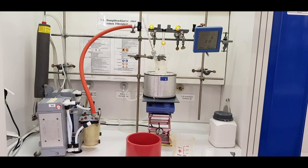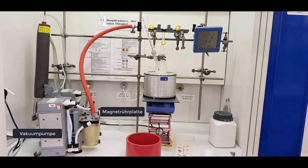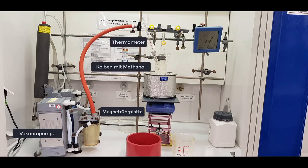The setup for this experiment consists of a vacuum pump, a magnetic stirrer, a three-necked round bottom flask with methanol and a magnetic stir bar, a thermometer, stopcocks for opening and closing, a manometer, and ice and salt.